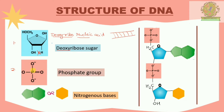The second major component of DNA is the phosphate group, where phosphorus is the major element. This phosphate group makes DNA acidic, and that is why we call it deoxyribonucleic acid — the 'acid' comes from DNA being acidic in nature due to the presence of the phosphate group. The third major component is the nitrogenous base.